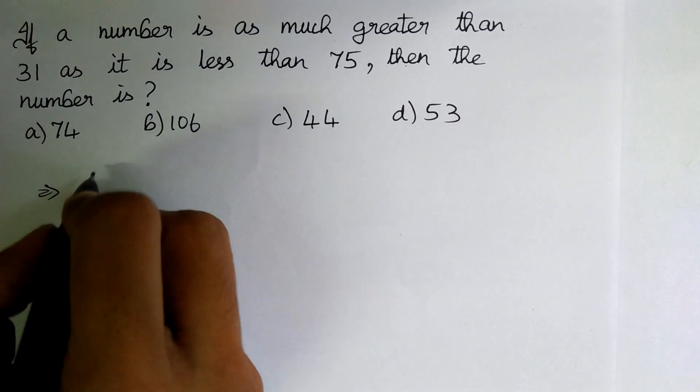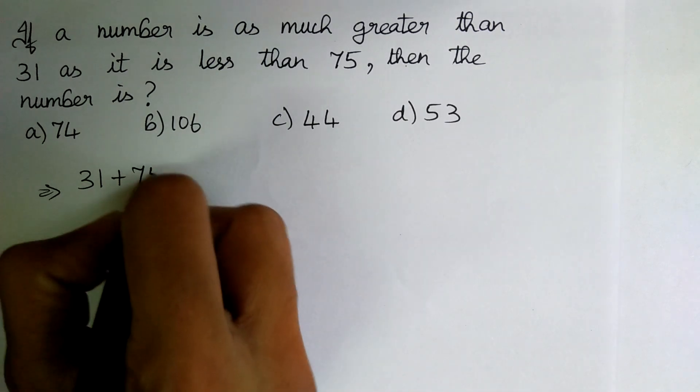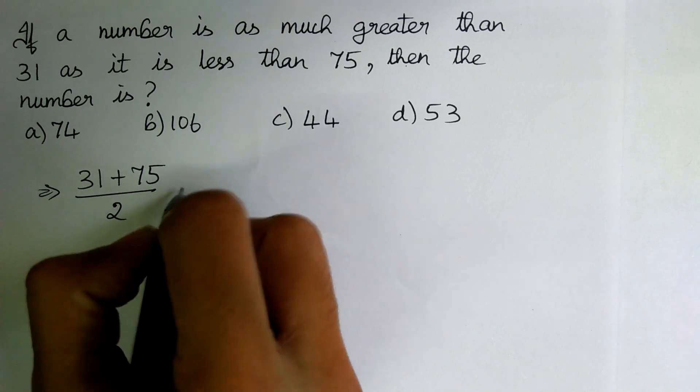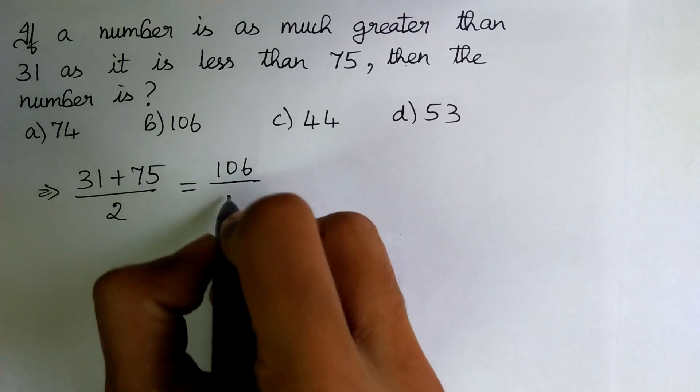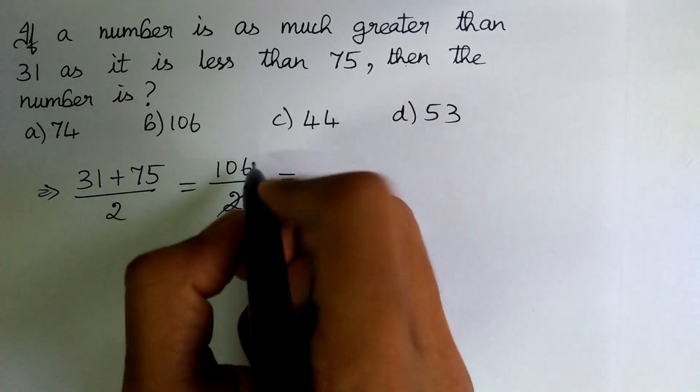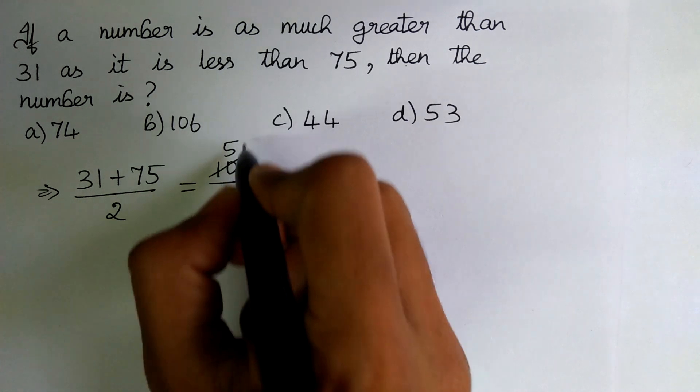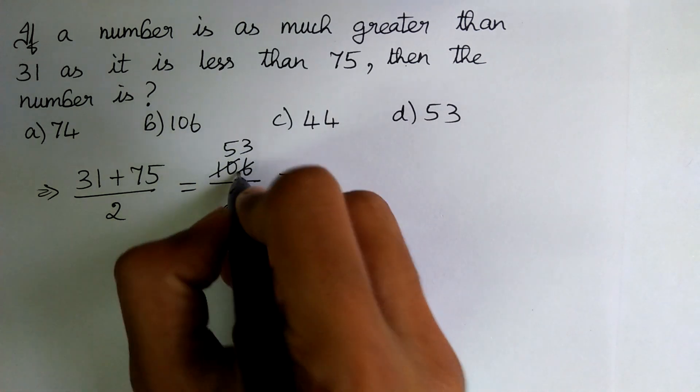Then the average of the two numbers is 31 plus 75 divided by 2, which is equal to 106 divided by 2, which equals 53.